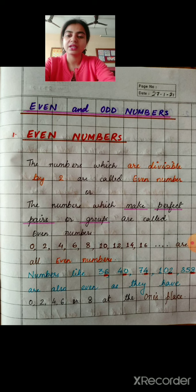The numbers like 0, 2, 4, 6, 8, 10, 12, 14, 16 and so on are all even numbers.